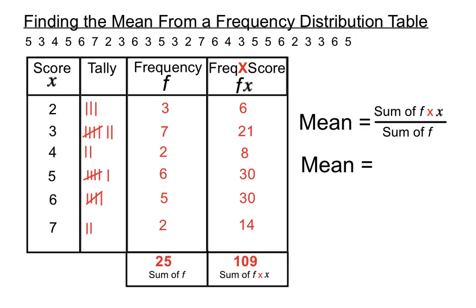So in this case, the sum of the fx column was 109. Put that on the top, we'll divide by the 25 scores we have. So it's the total still divided by how many there are. And that gives us a mean of 4.36.